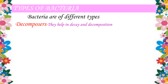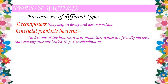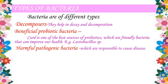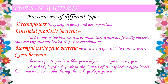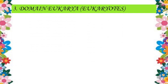Bacteria are of different types. Some are decomposers that help in decay and decomposition. Some beneficial bacteria are called probiotic bacteria — a good example being curd, which contains friendly bacteria like Lactobacillus that improve health. Harmful pathogenic bacteria are responsible for causing diseases. Cyanobacteria are photosynthetic blue-green algae that produce oxygen and had a key role in changing atmospheric oxygen levels from anaerobic to aerobic during the early geologic period.